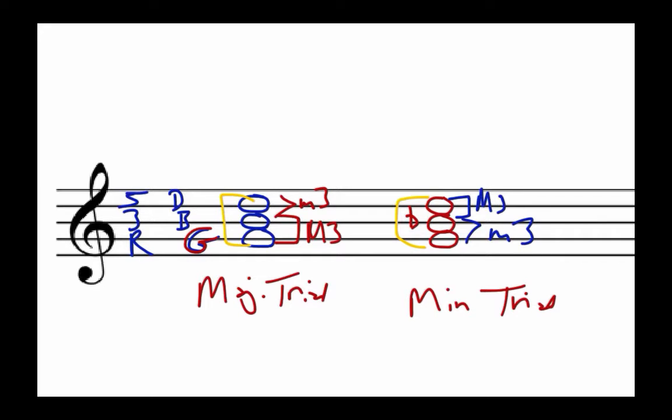There are four qualities of triads, generally speaking, major, minor, diminished, and augmented. Let me show you what diminished triads look like. So diminished triads have not only a minor third from the root to the third, so that's a minor third from F to A-flat. But then they have another minor third, in this case from A-flat to C-flat. So the root to the third is a minor, and the third to the fifth is a minor. And it turns out that the outside notes now are actually a diminished fifth, not a perfect fifth.